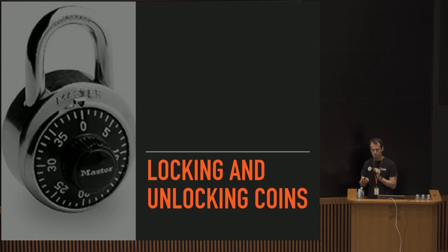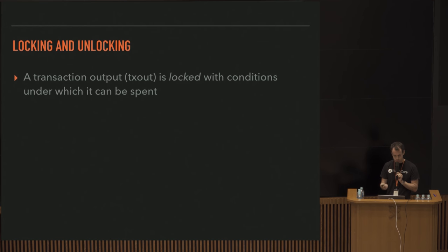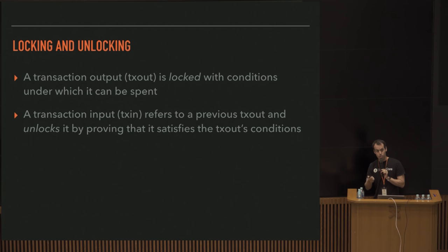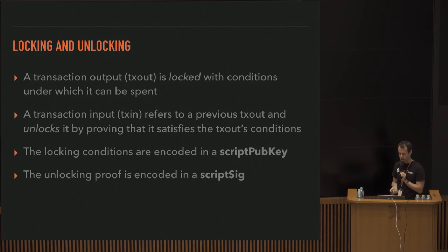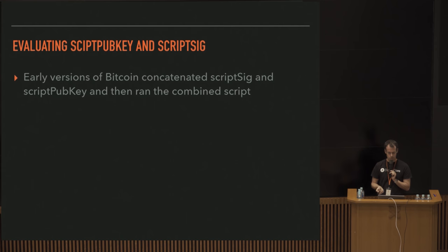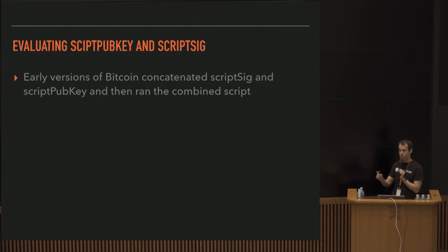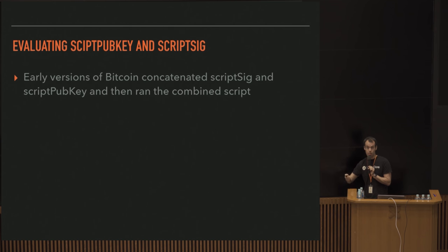How do we lock a coin and encumber it with a condition, and how do we unlock it? A transaction output is locked with conditions, and the input unlocks it by satisfying those conditions. The locking conditions are encoded in a script called ScriptPubKey, and the unlocking proof or conditions are encoded in a ScriptSig. Early versions of Bitcoin simply concatenated those scripts together and ran them - if it evaluated to true, that was a valid spend.